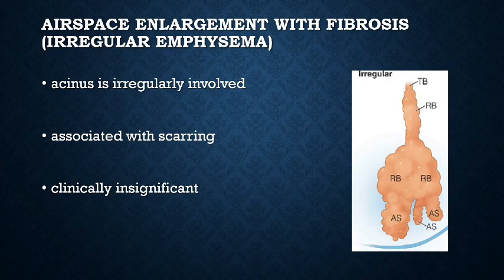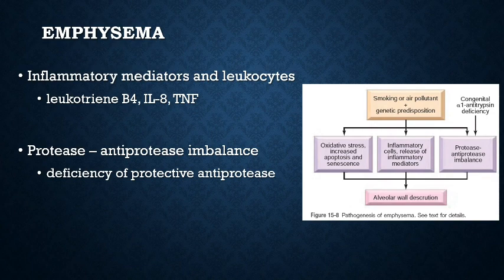We also have airspace enlargement with fibrosis, also called irregular emphysema. In this type, the acinus is irregularly involved, hence its name. It is almost invariably associated with scarring, and in most instances it is clinically insignificant. Remember: for irregular emphysema, it is clinically insignificant.